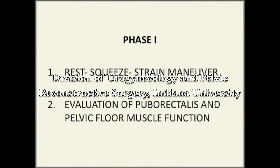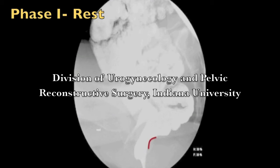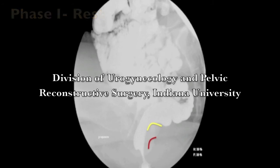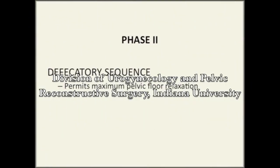During phase 1 of the DCP, the patient is asked to perform rest, squeeze, and strain maneuvers to evaluate prolapse and pelvic floor muscle function. The anorectal angle is demonstrated in red. Elevation of the anorectum, seen in yellow, demonstrates good pelvic floor muscle function. Prolapse is evaluated by asking the patient to bear down. During phase 2, the patient is asked to defecate, which permits maximum levator ani relaxation and demonstrates the maximum extent of prolapse.